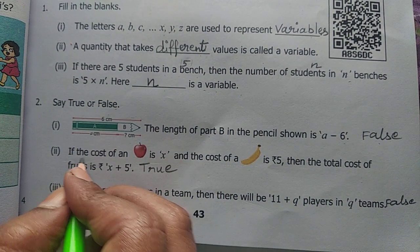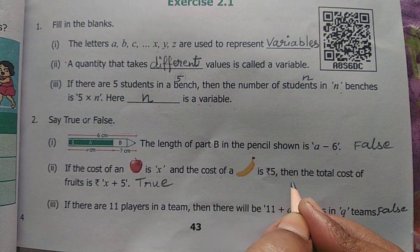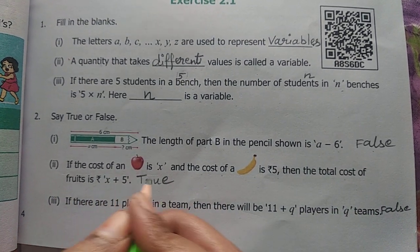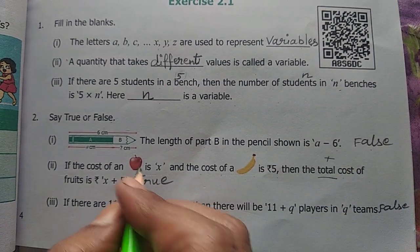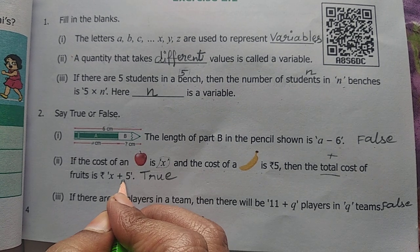If the cost of apple is x and the cost of banana is 5, then the total cost of fruit is x plus 5. So x is the cost of apple. So x plus 5. True.